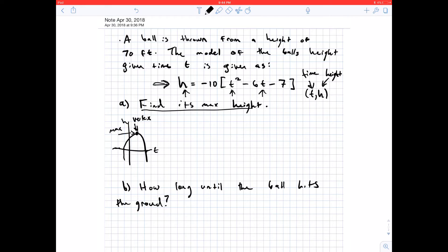So let's go ahead and try to get this into vertex form. So the way I like to do these is just focus on this part here, everything that's inside the brackets, and then worry about the negative 10 later. We'll multiply that in later. So for now, we want to try to work with this t squared minus 6t minus 7.